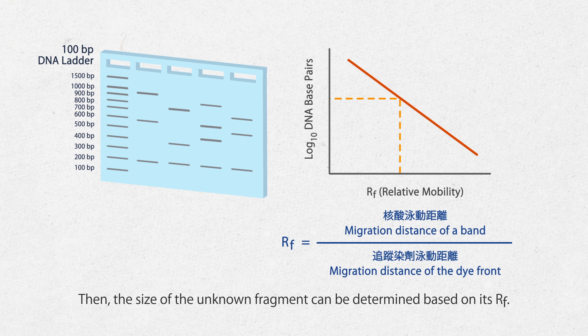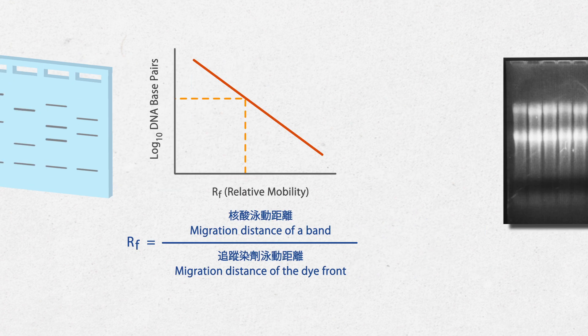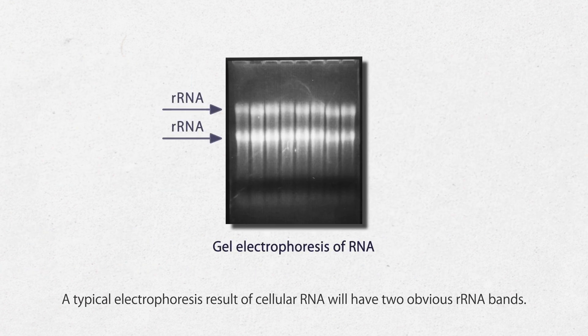Then, the size of the unknown fragment can be determined based on its Rf. A typical electrophoresis result of cellular RNA will have two obvious rRNA bands.